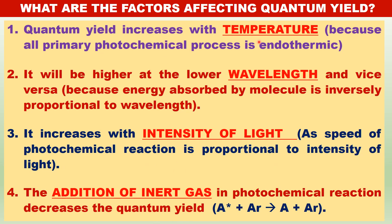What are the factors affecting quantum yield? Effect of temperature: increasing temperature increases quantum yield because the primary photochemical process is endothermic, so quantum yield increases with temperature. Effect of wavelength: as we lower the wavelength, the energy increases — the energy of the photon absorbed is very large — therefore quantum yield is higher at lower wavelengths, and vice versa, quantum yield is lower at higher wavelengths.